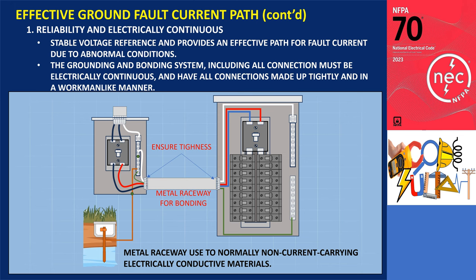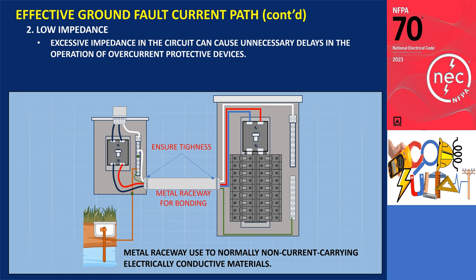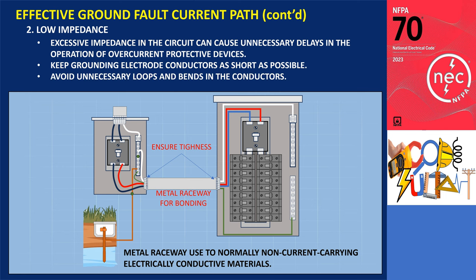A low-impedance circuit is characterized by minimal impedance achieved through proper installation techniques. Excessive impedance can cause unnecessary delays in the operation of overcurrent protective devices, compromising safety. To effectively limit voltage to ground, it is essential to keep grounding electrode conductors as short as possible, avoiding unnecessary loops and bends that can introduce additional impedance. By minimizing the length and complexity of the grounding electrode conductors, the voltage to ground can be effectively controlled, enhancing overall safety and reliability.